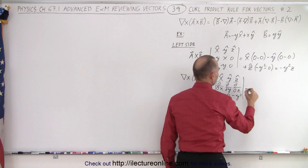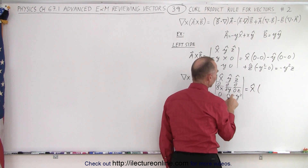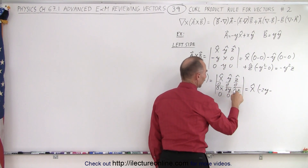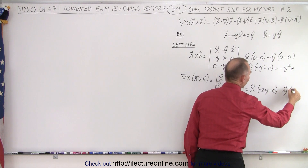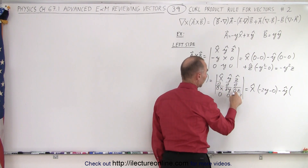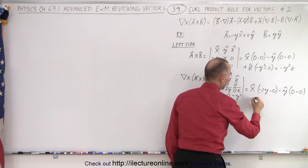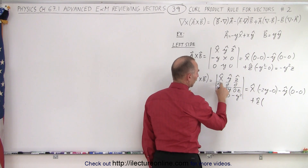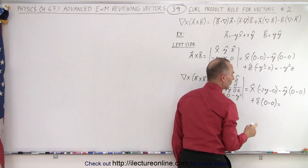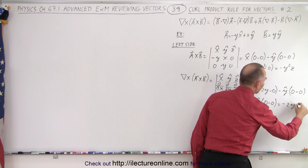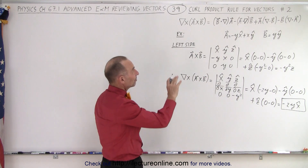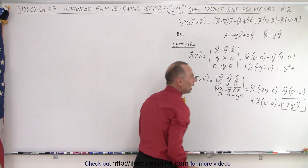This is equal to the x unit vector times the partial with respect to y of minus y squared, which is minus 2y, minus the partial with respect to z of 0, which is 0. Minus the y unit vector times the partial with respect to x of minus y squared, which is 0, and the partial with respect to z of 0, also 0. Plus the z unit vector times partials of 0 with respect to x and y, both 0. So the result is just minus 2y in the x direction — that is the left side of the equation, which means the four right-side terms must add up to minus 2y in the x direction.